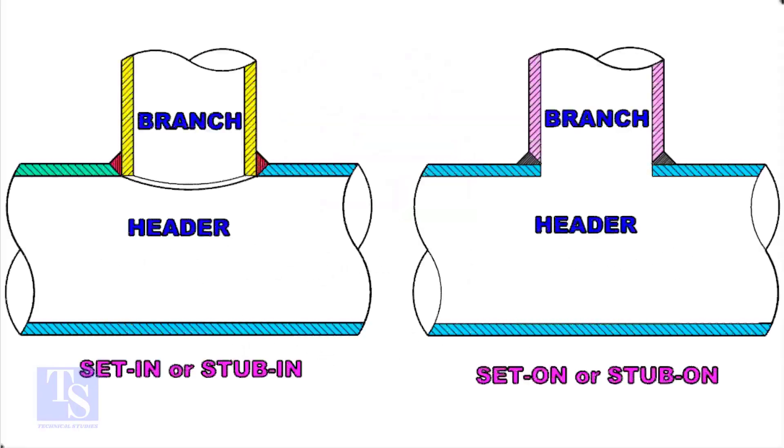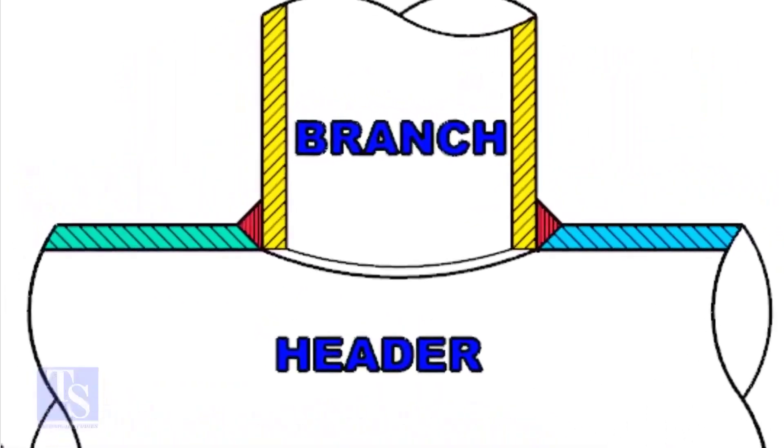Let us check the difference between a stub-in and stub-on connection. Look at the stub-in joint, the bevel is prepared on the header and the branch pipe is in the header.